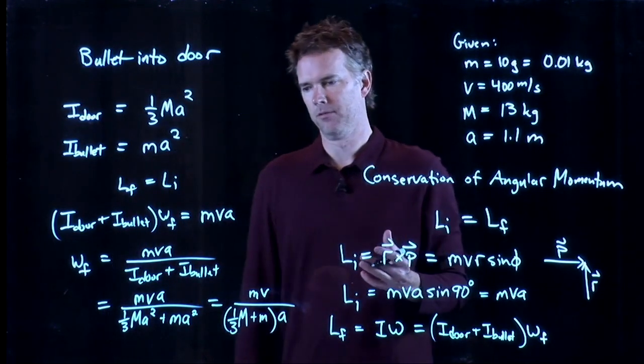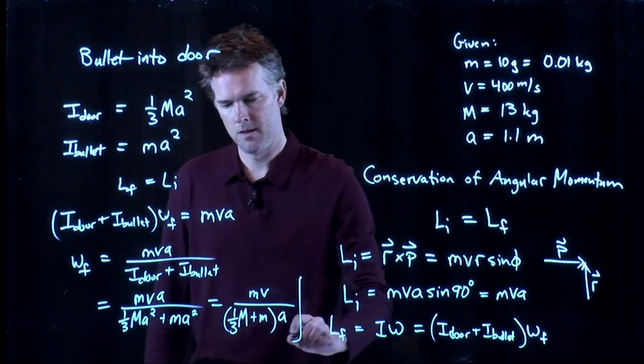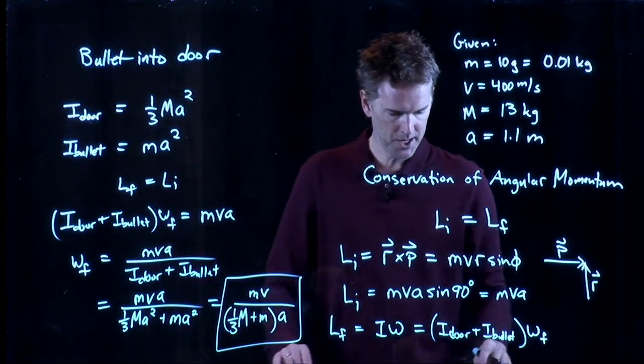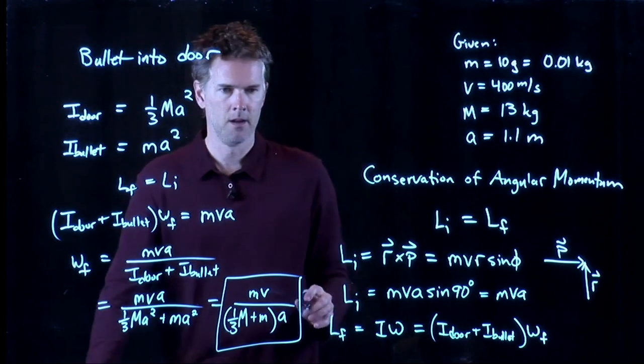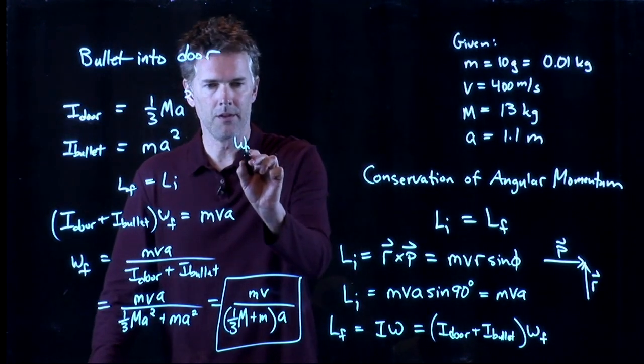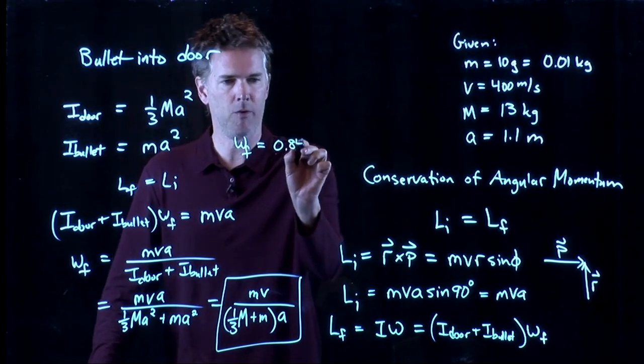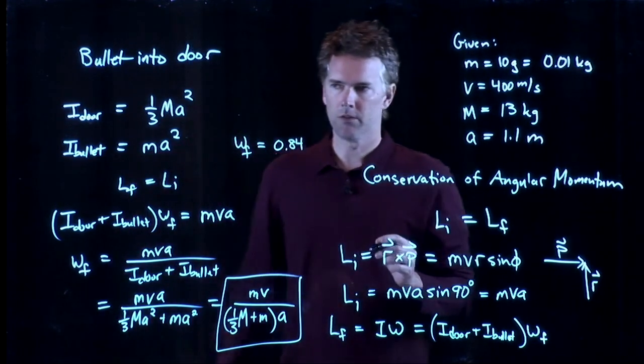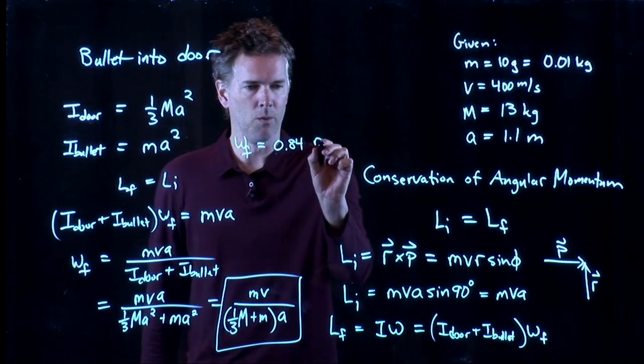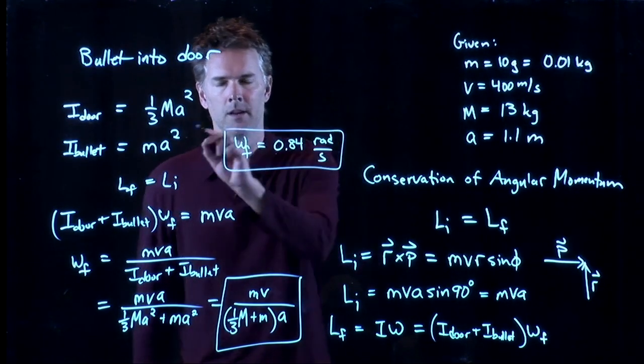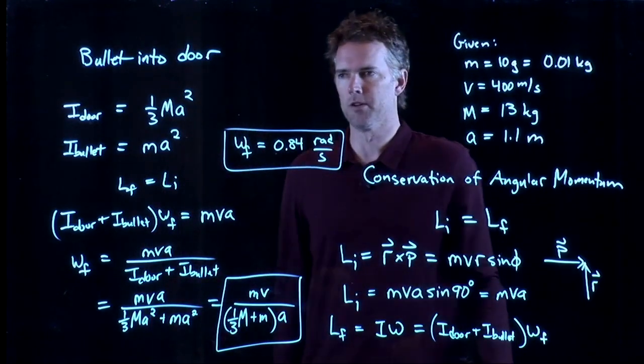And now you have all those numbers. And if you take those numbers and plug them in and you want to double check what I got you should end up with omega final is 0.84 and the units of course are radians per second. This is how fast that door is going to rotate.